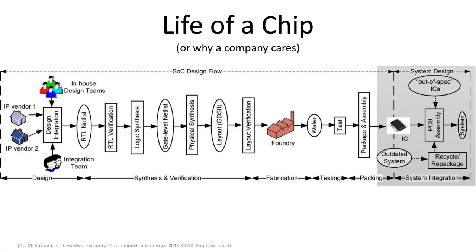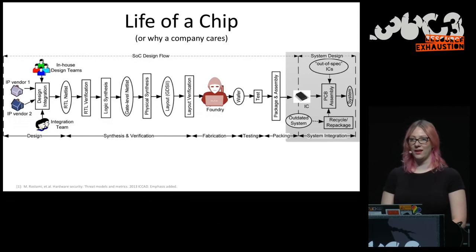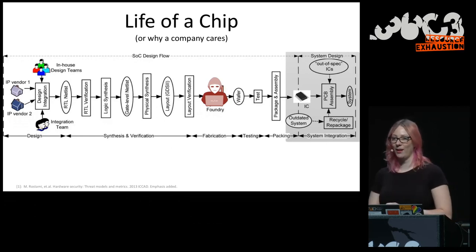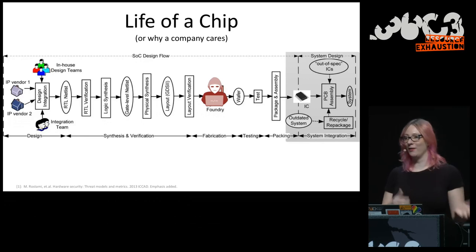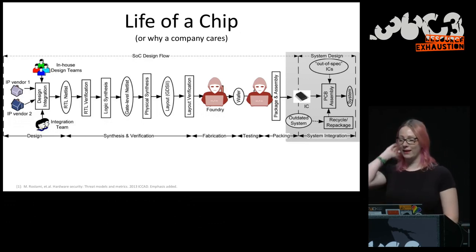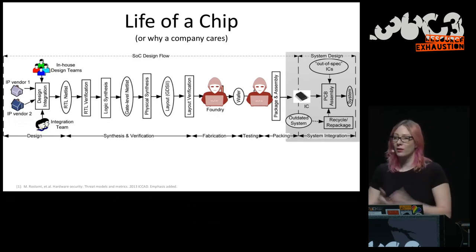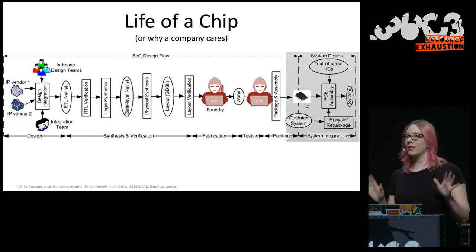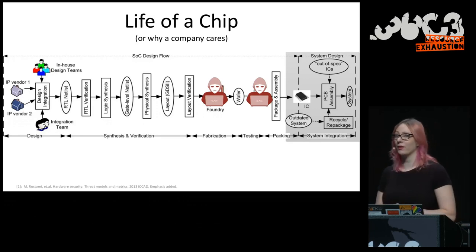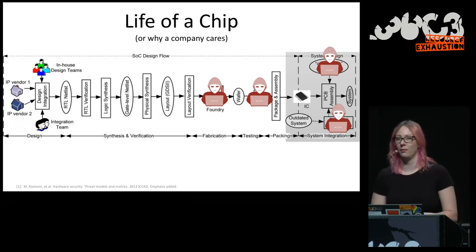Why do we care about reverse engineering? What is a company worried about? They don't want the foundry stealing their design — the foundry makes the two million you wanted and also produces 20 million to sell. They also don't want out-of-spec or badly tested chips going anywhere: the foundry tests them, 90% are okay, they keep the 10% and 'definitely get rid of them.' They don't want any out-of-spec or recycled chips back in the market.